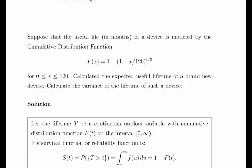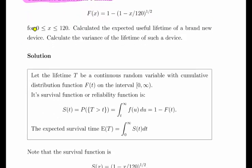Suppose that the useful lifetime in months of a device is modeled by the cumulative distribution function F(x) = 1 - (1 - x/120)^(1/2) for 0 ≤ x ≤ 120. Calculate the expected useful lifetime of a brand new device and calculate the variance of the lifetime of such a device.